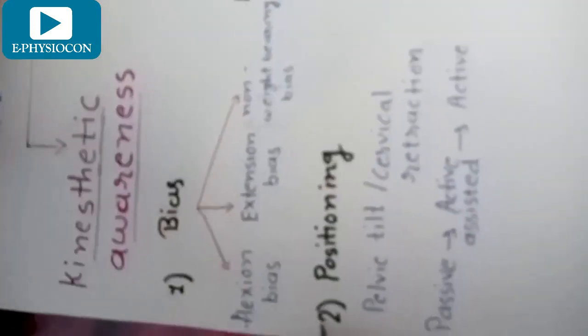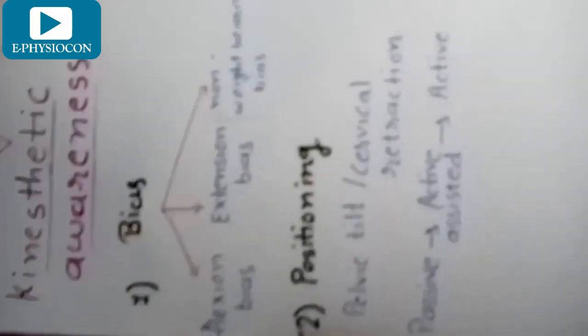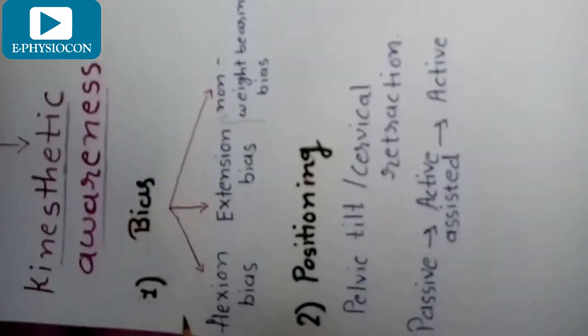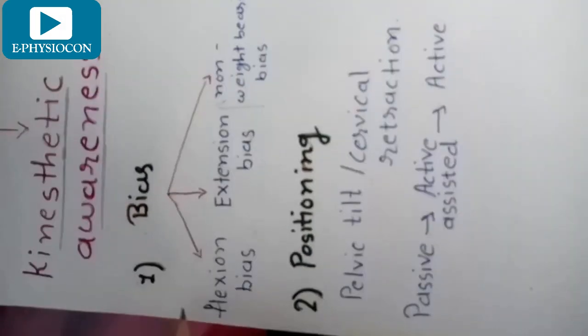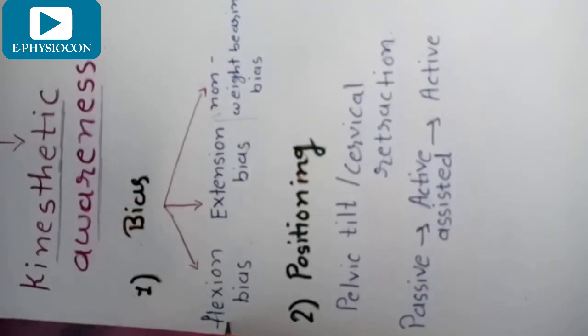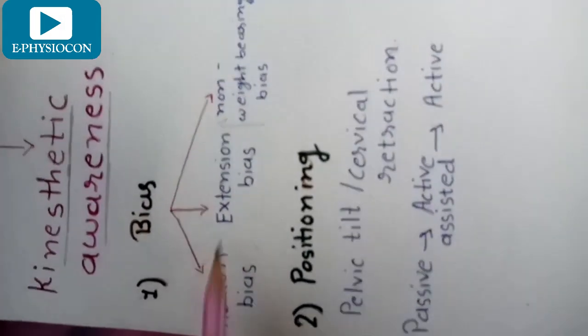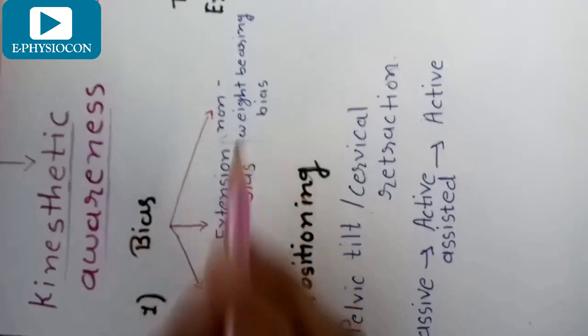Let's start with the first stage: kinesthetic awareness. It is essentially proprioception training for safe movement. It includes two points: first is bias, and second is positioning. There are three kinds of bias: flexion bias, extension bias, and non-weight bearing bias.